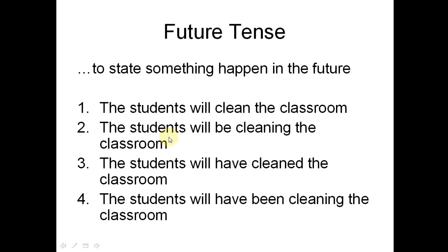Number two, future continuous: 'The students will be cleaning the classroom.' Many people are confused by 'will be cleaning' — how can something be happening in the future? This form is used as a prediction. It usually appears alongside another clause. For example, a teacher says: 'I'm sure that when I come to the classroom, the students will be cleaning the classroom.' The teacher is confident that when she arrives, she will see the students in the middle of cleaning — even though she hasn't seen it yet. That is a future prediction.